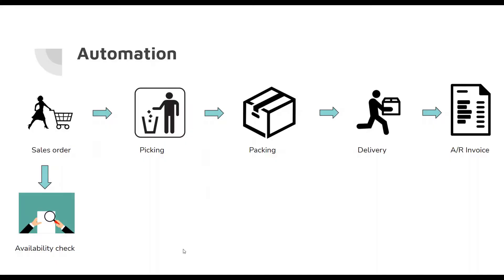In the sales process, we introduce two new features to automate the whole process. When you create a sales order for a particular customer, you have to check the availability of an item — whether it is deliverable to that customer or not. You can also check if the item is in one warehouse or a different warehouse. After the availability check, it goes into picking using the pick list, then packing, then generating the delivery document, followed by the AR invoice.